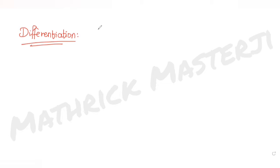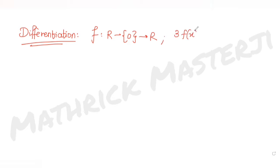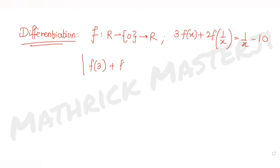The question tells us that if a differentiable function f, which belongs to all real numbers except zero, belongs to R, and the expression given is 3f(x) + 2f(1/x) = 1/x - 10, then we need to figure out the value of |f(3) + f'(1/4)|.